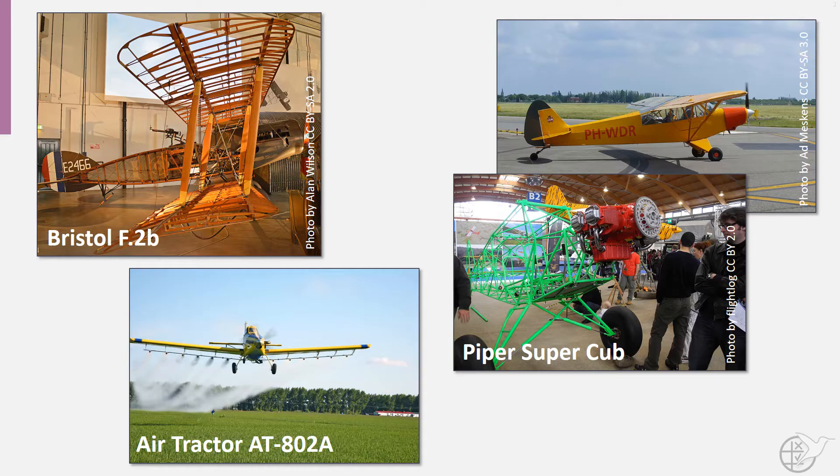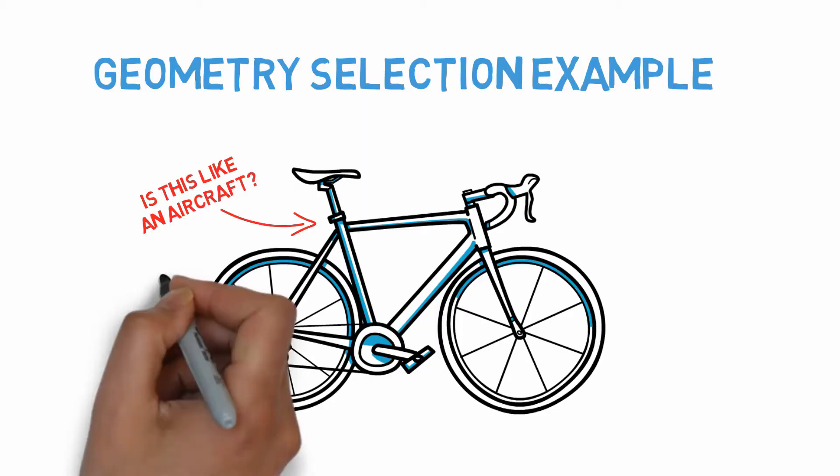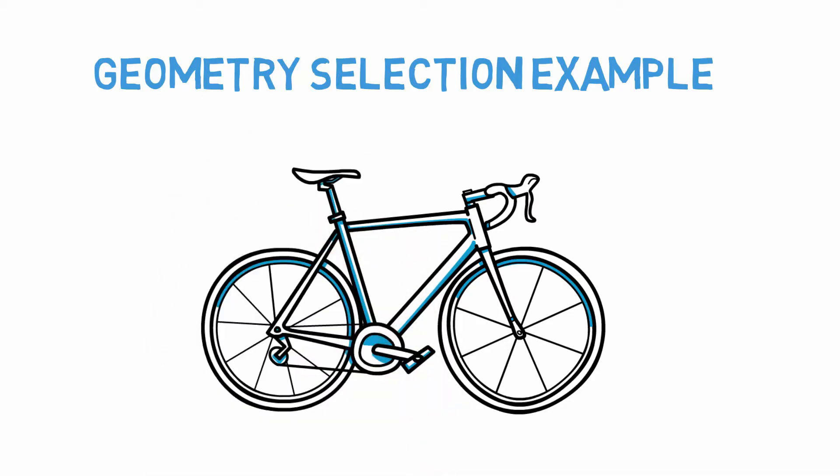Here, for instance, you see examples of tubular framed aircraft that have been designed in the past. But for our purposes, we will stick with the bicycle example, as it is perhaps a bit more relatable and intuitive for you.